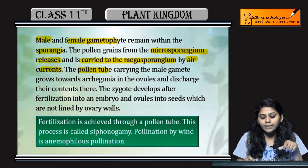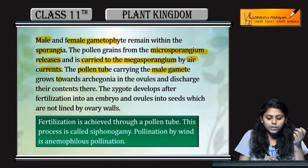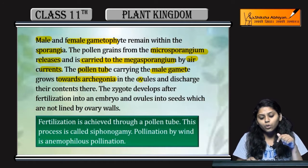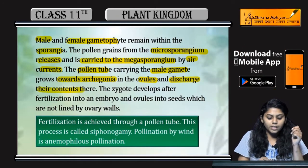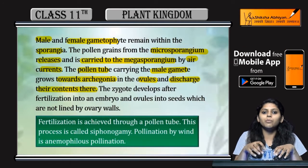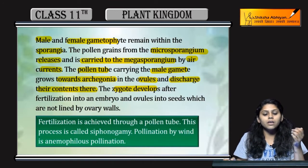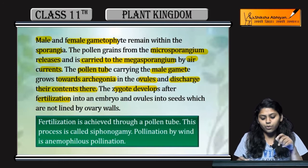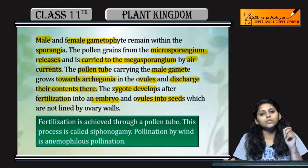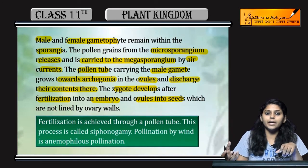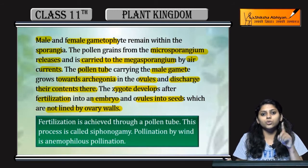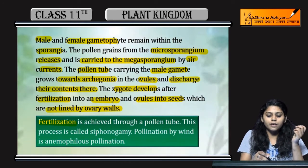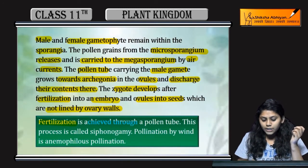Pollen tubes jo hain they carry the male gametes and grow towards the archegonia into the ovules. Ovules tak grow karenge archegonia ki taraf and discharge karenge apne contents there — pollen grains. Zygote develop karega after fertilization into an embryo and ovules into seeds, which are not lined by ovary walls. Jo seeds hain gymnosperms ke, un mein ovary walls absent hongi.